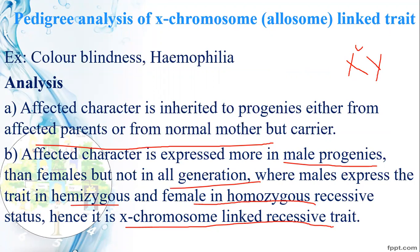For X chromosome recessive traits, females are not affected in all generations unless they are homozygous. Only homozygous females are affected; otherwise they act as carriers. Males in hemizygous condition — having one X and one Y — are directly affected. This hemizygous condition in males is why they are more frequently affected.